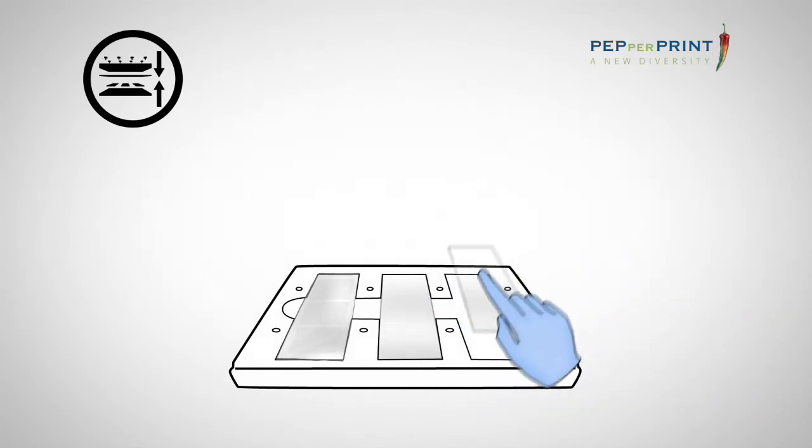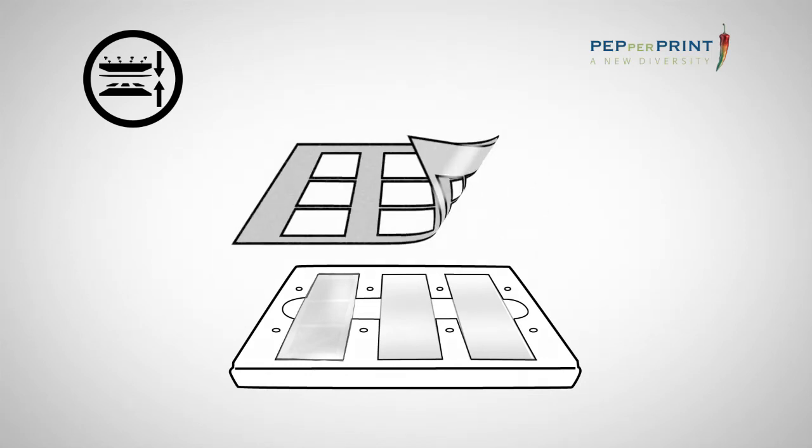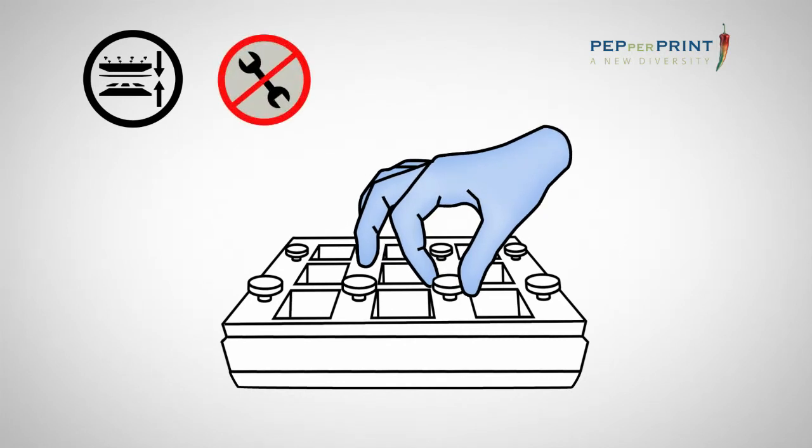Fill empty slide holders with dummy slides to prevent breakage of the array slide. Place the seal with the glossy side facing down onto the slides. Place the cover plate of the incubation tray onto the seal. Tighten all thumb screws carefully. Now the tray is prepared.